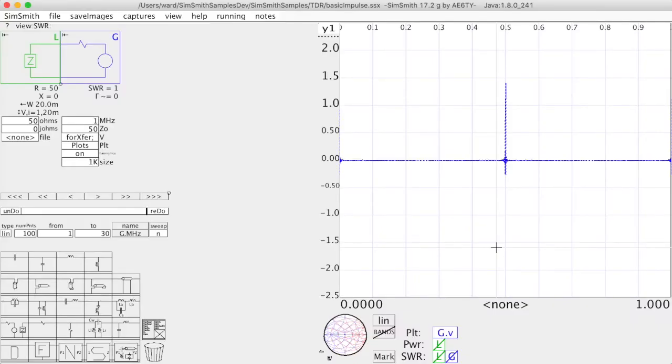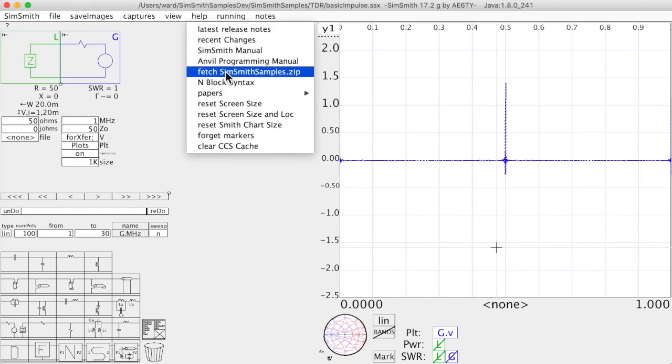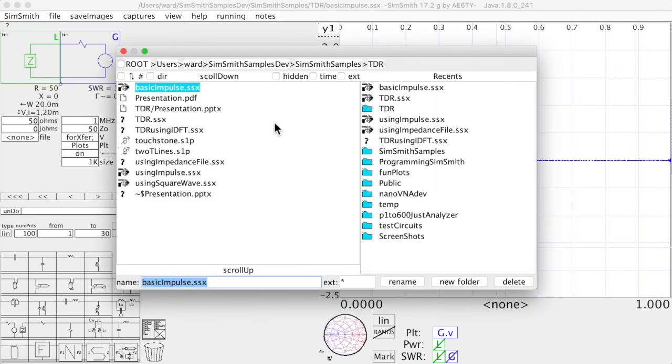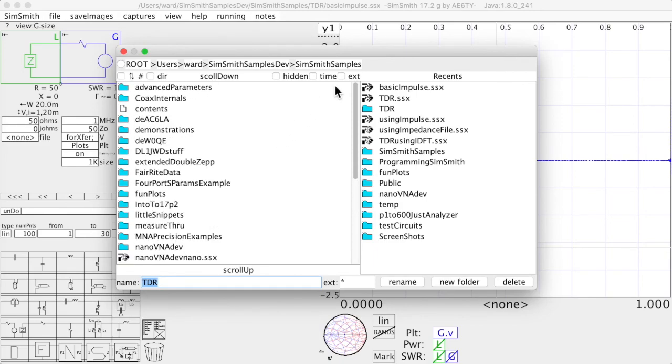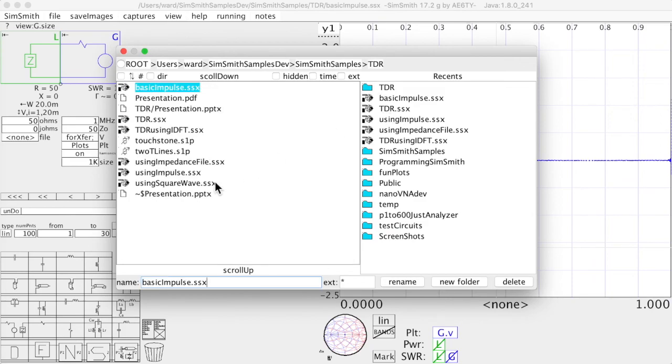I should mention that all of these programs are in the SimSmith samples zip file that is distributed along with each release of SimSmith. If you go up here to help, you can fetch this zip file. And one of the things that we'll provide is this directory, which has lots of things in it. In this particular demonstration is in the TDR subdirectory. And here's all the files that I use and all the circuits that you've seen in this presentation.